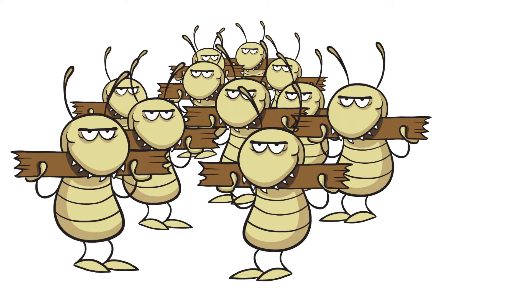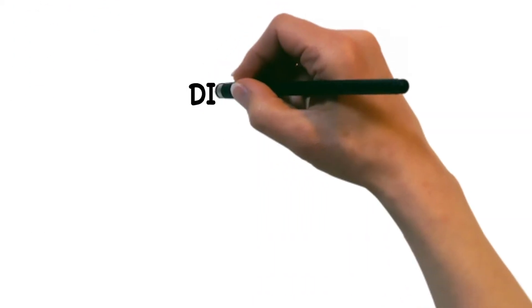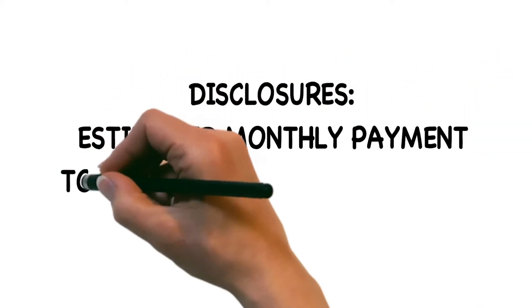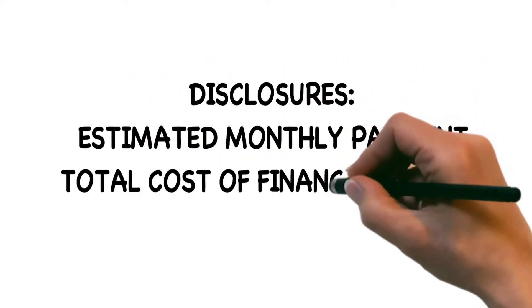Shortly after you apply for your mortgage loan, you'll receive initial disclosures from your lender, which will list your estimated monthly payment and the total cost of all finance charges involved in your mortgage loan.